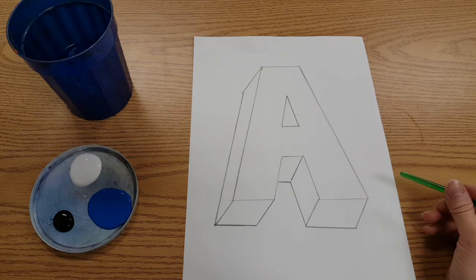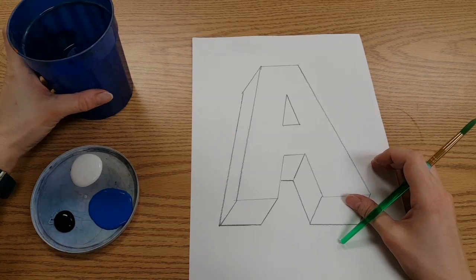For the next part of our letter we're going to paint it so it has value where there will be a light side, a medium side, and a dark side.